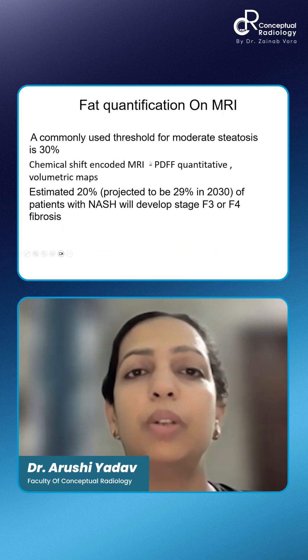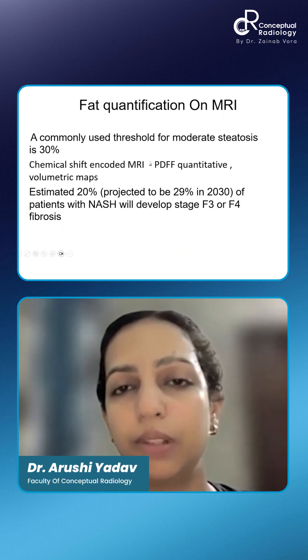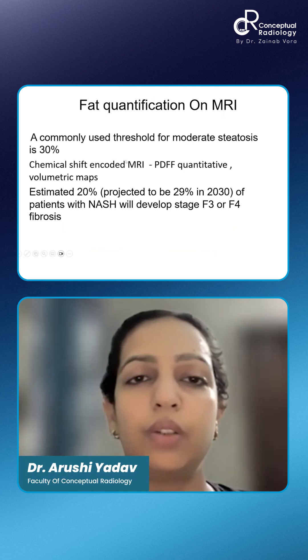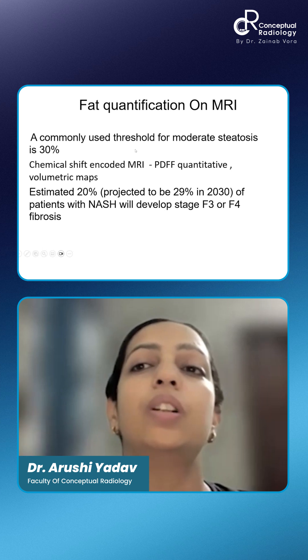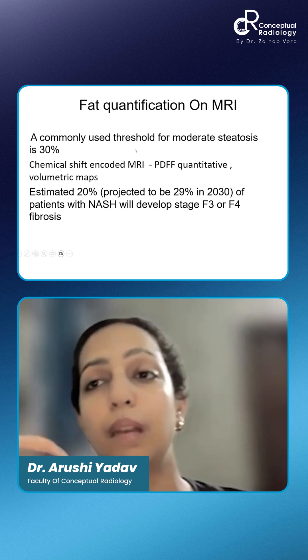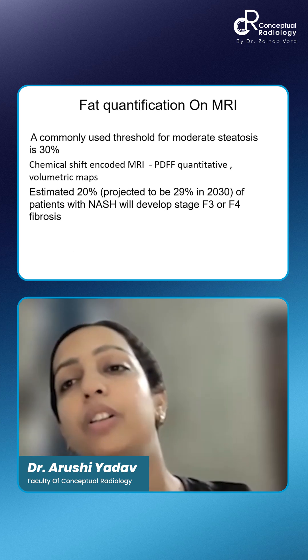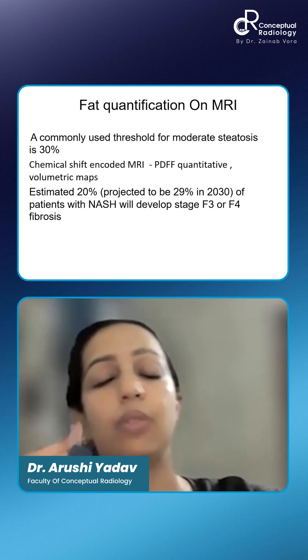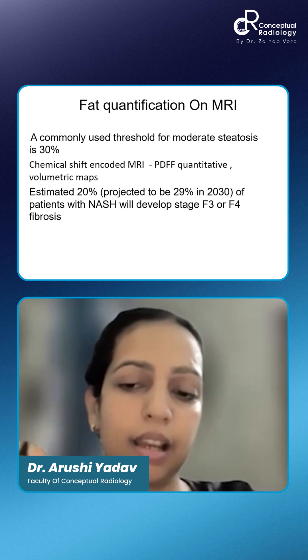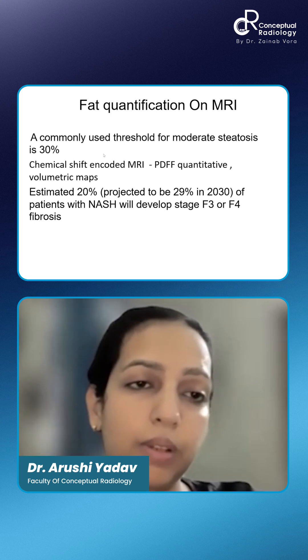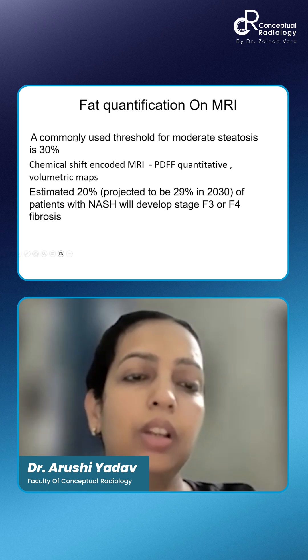Coming to the fat part — that was the iron quantification part. But with iron quantification, our R2* maps are a byproduct of fat quantification, because we are using Dixon signals, and that is what I'm going to tell you.